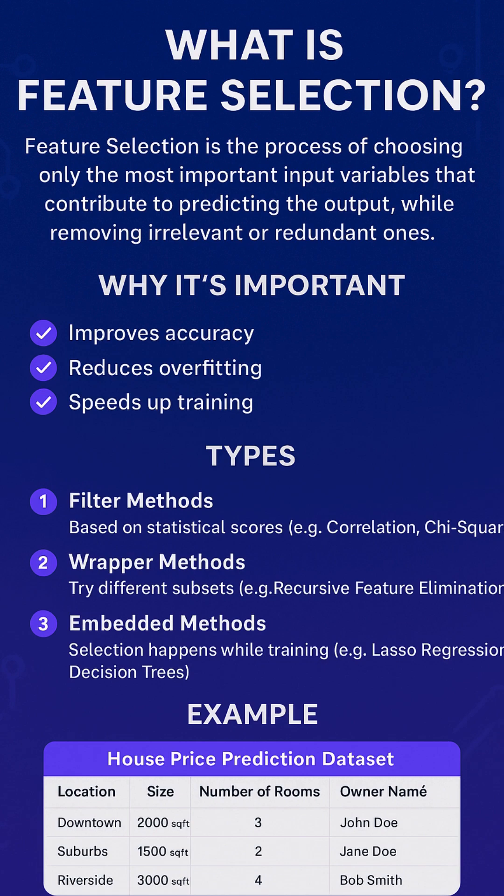Embedded methods — selection happens while training — for example, lasso regression and decision trees.